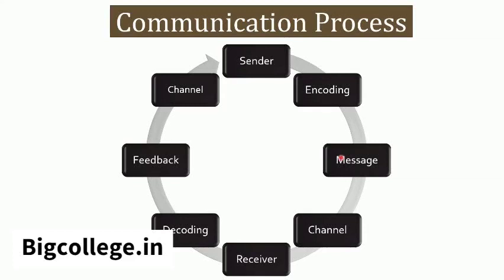The message is the main element of the entire communication process. The channel implies the carrier of the message, which can be face-to-face communication, telephonic conversation, video calling, letter, email, SMS, facial expressions, body language, tone of voice, etc. The receiver is the person to whom the message is directed. It is very important for the sender to understand the receiver's decoding ability and interpretation capacity for effective communication. The next step is decoding, which involves interpretation of the message by the receiver. After decoding the message, the receiver will revert back to the sender in the form of feedback. Feedback is a very essential part of the entire communication process as it indicates that there is no distortion of the message. The receiver looks for the channel in the same way as the sender communicated. Communication can be regarded as effective when the message is received and interpreted in the same sense that the sender intended to convey.